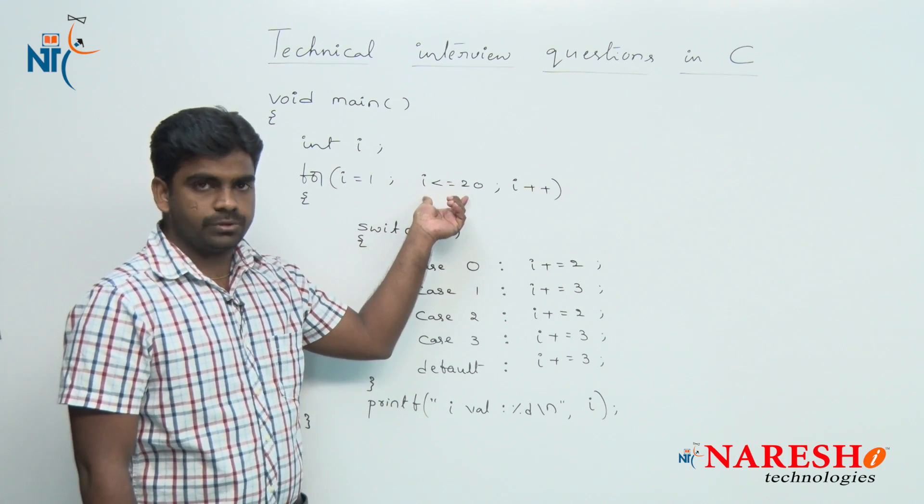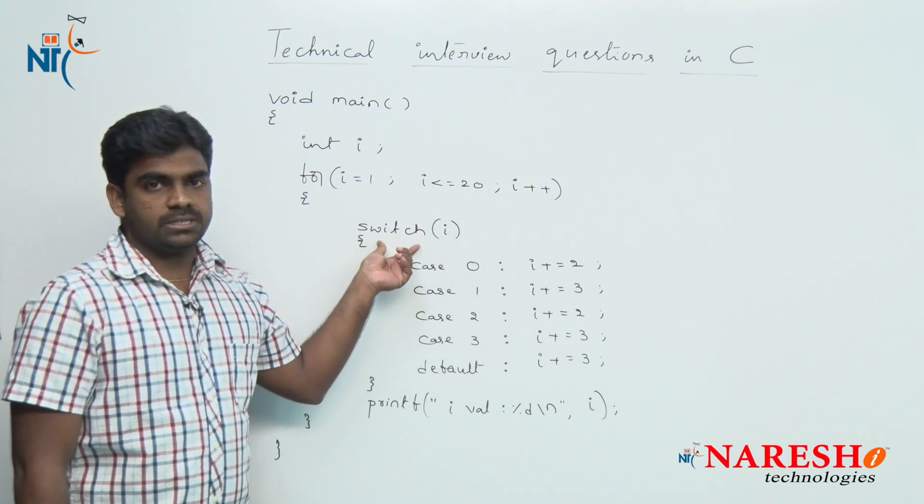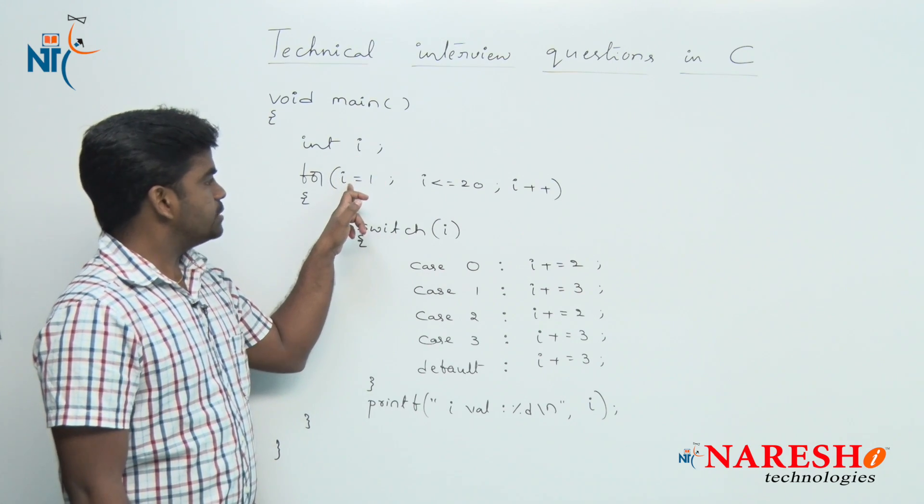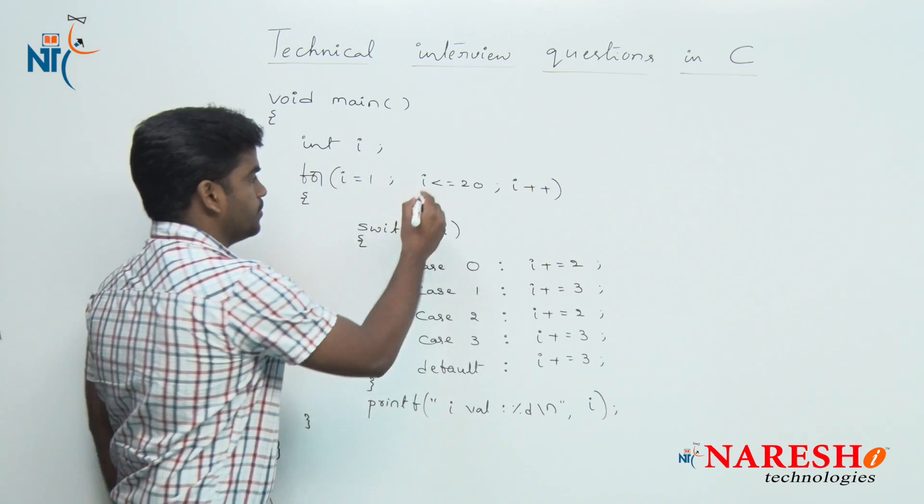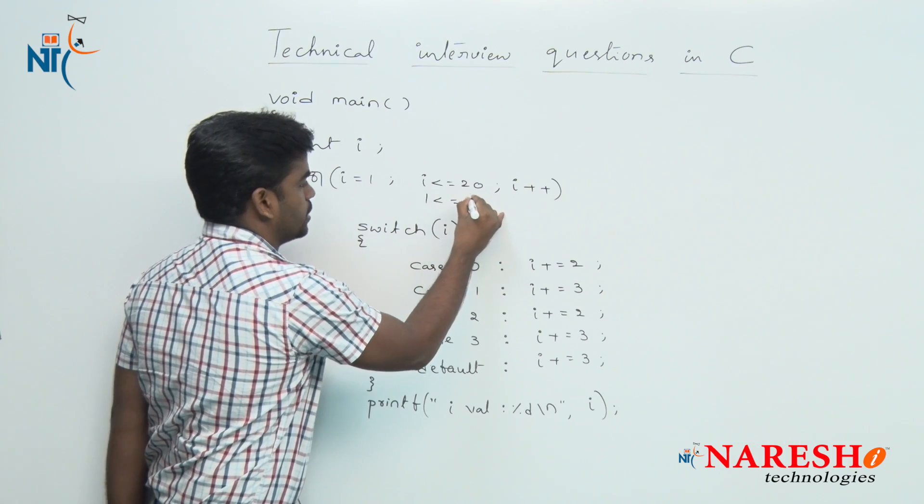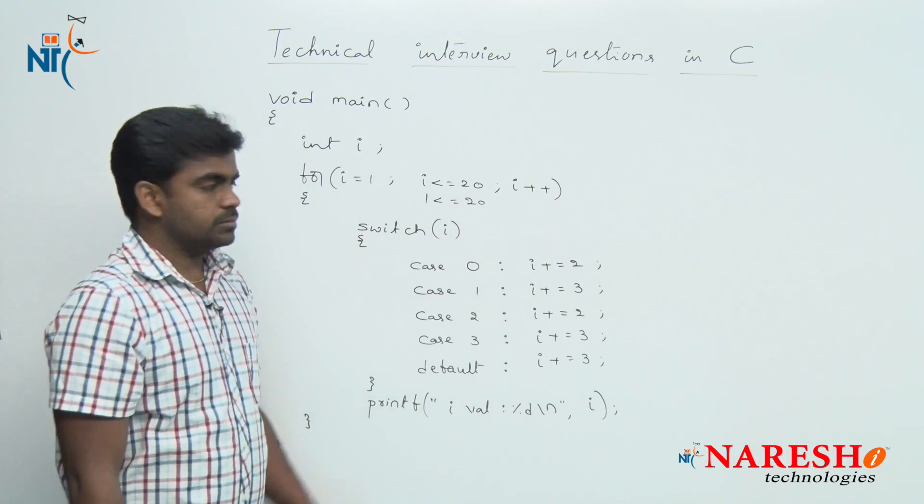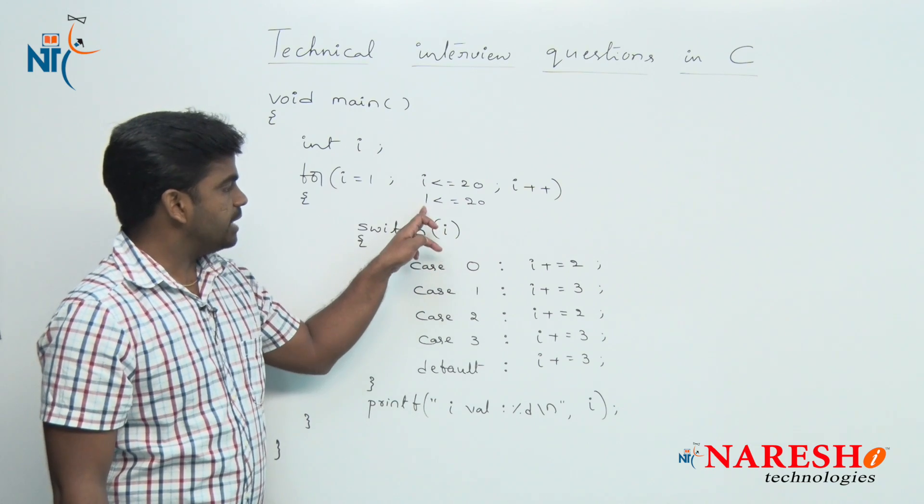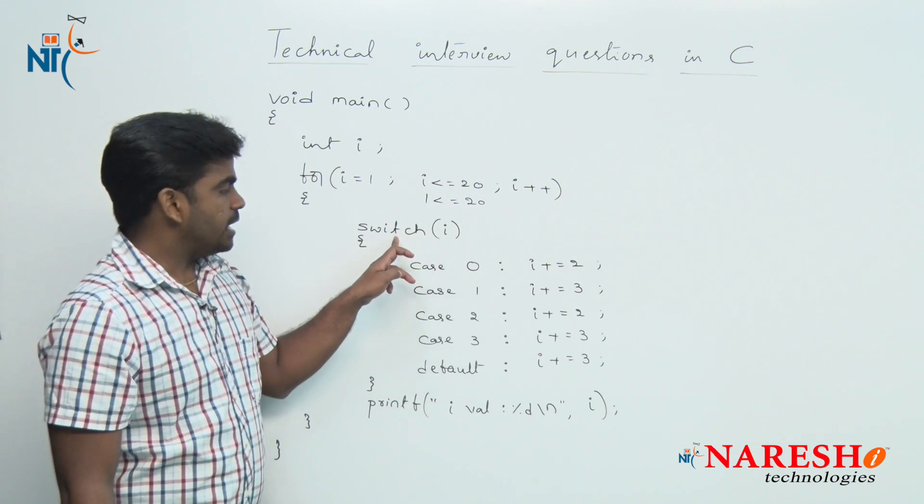First of all, the i value we are initializing with 1. Here 1 is less than or equals to 20, condition true. So the control moves inside and here it will substitute the value. i value is 1 will be substituted and how switch case executes.